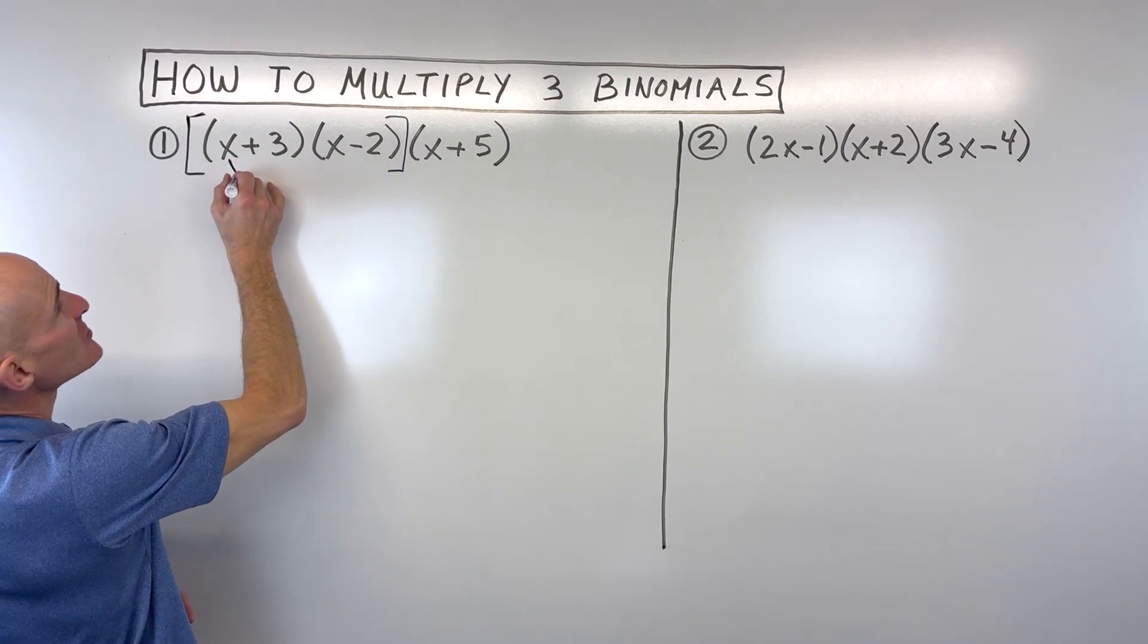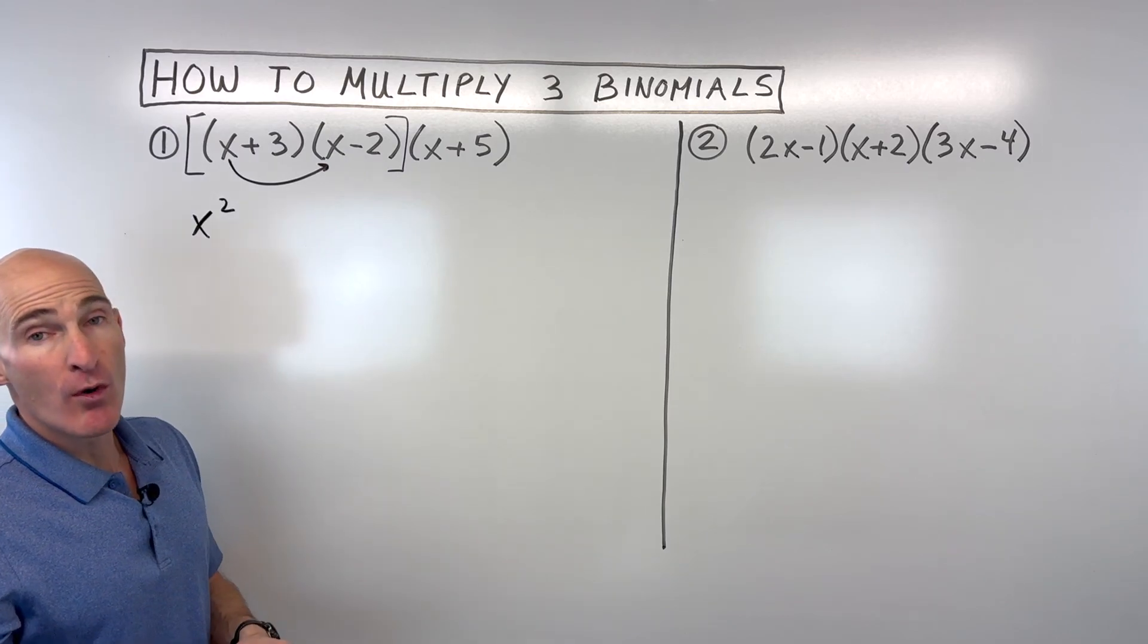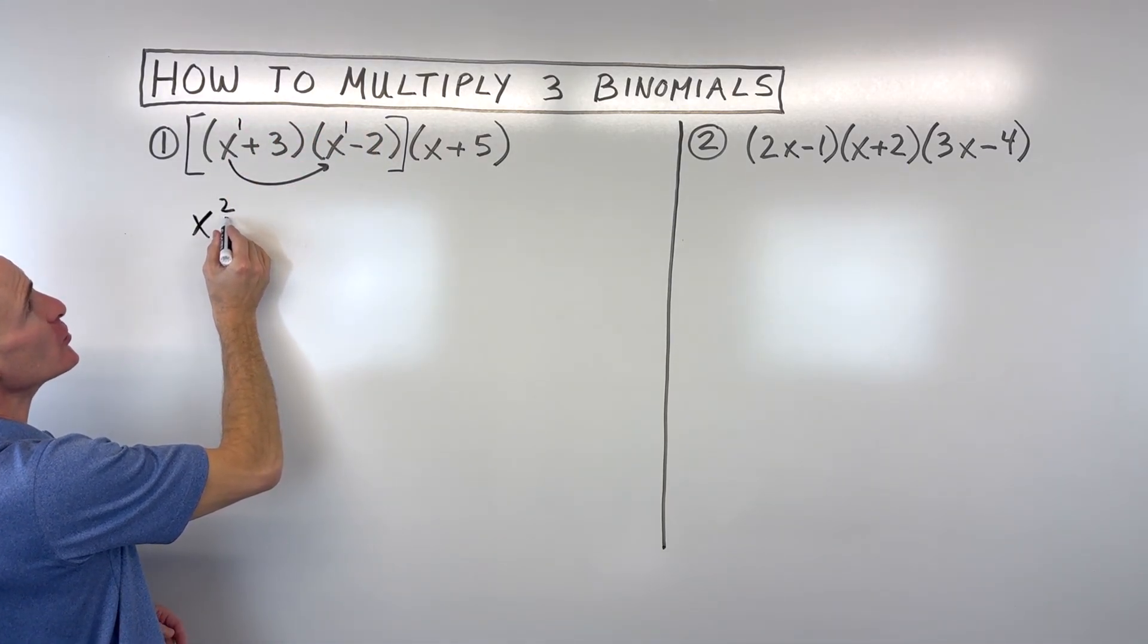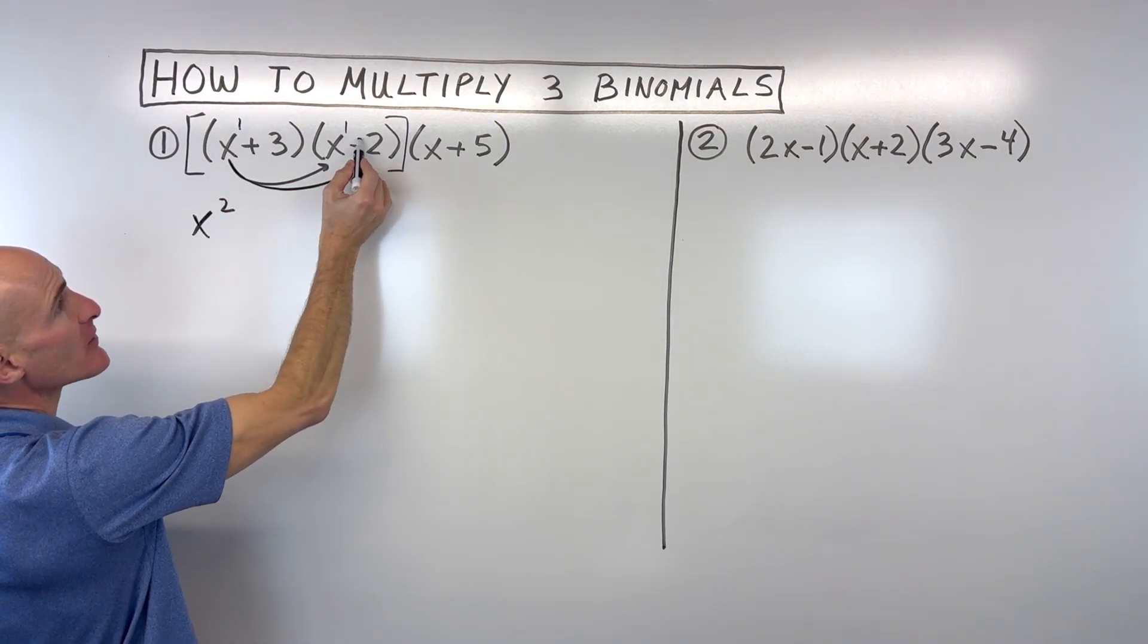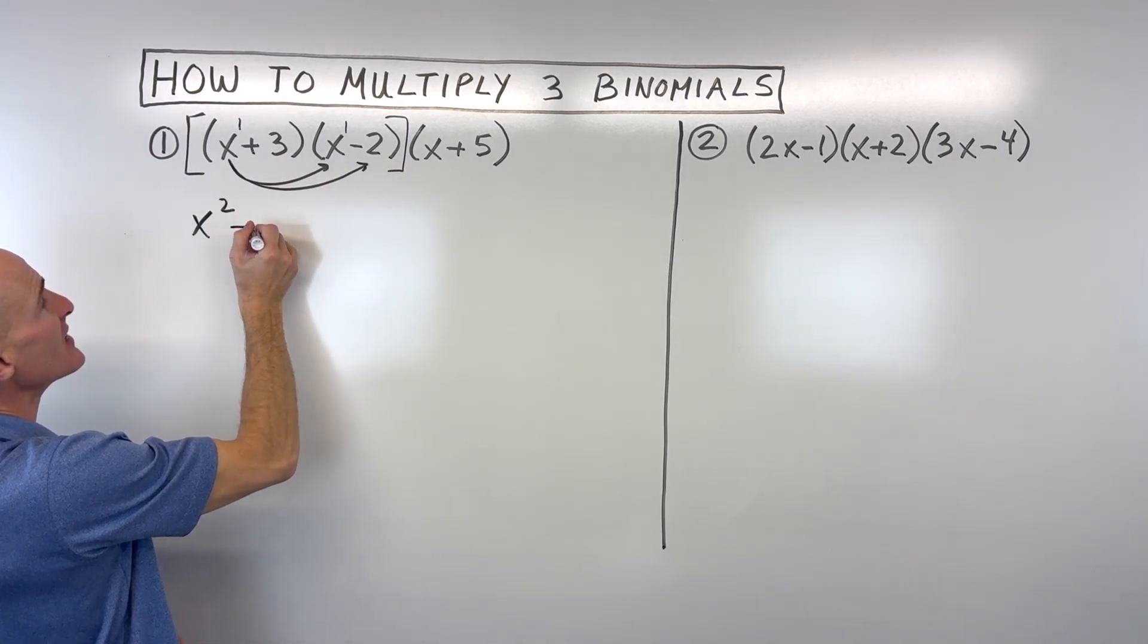So I'm going to take this x right here, and I'm going to multiply it by x. x times x is x squared. Remember, when you multiply, you want to add the exponents together. So one plus one is two. Then we're going to take x times negative two. Make sure you capture the sign, whether it's negative or positive. So negative two times x is negative two x.